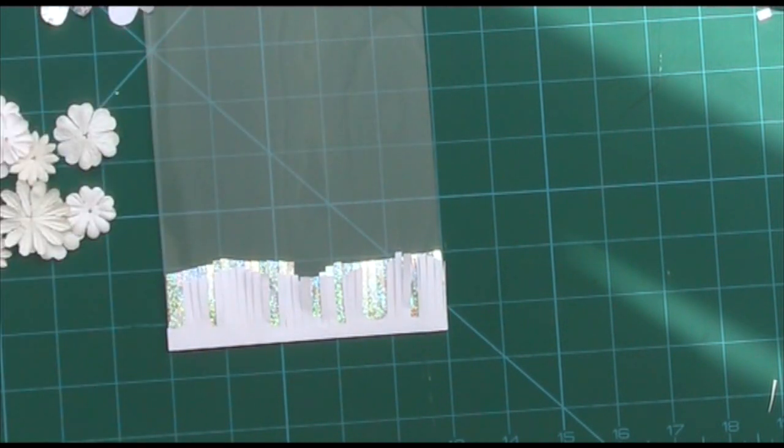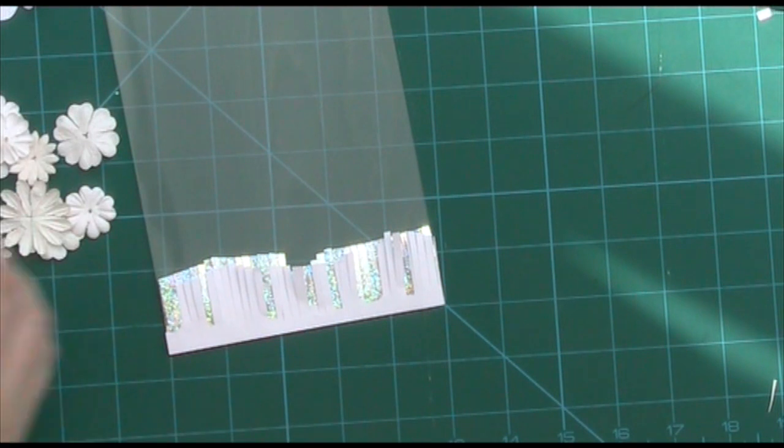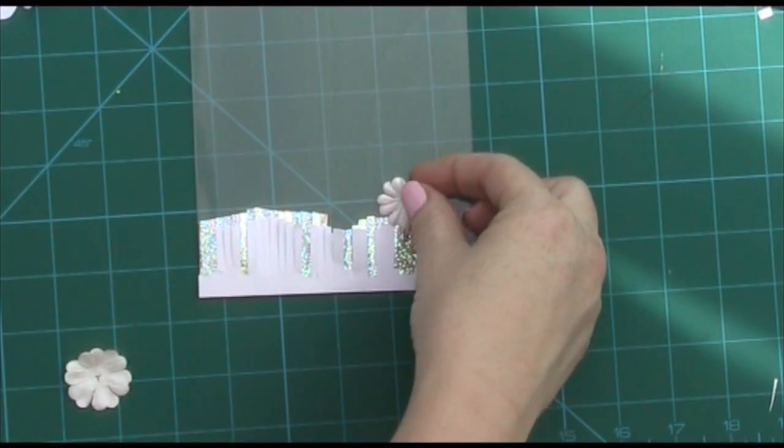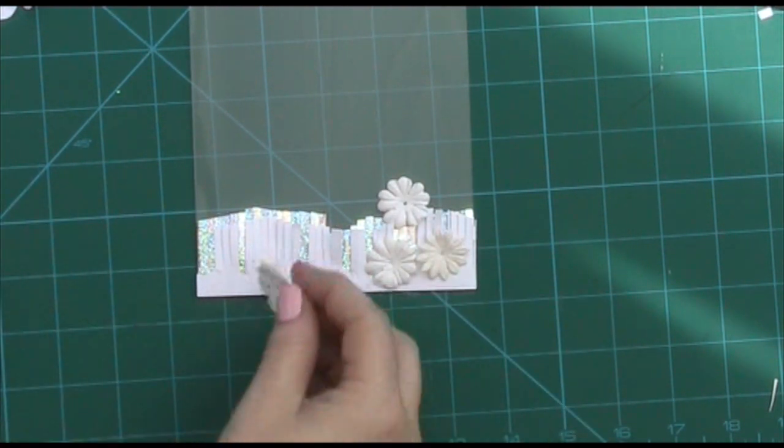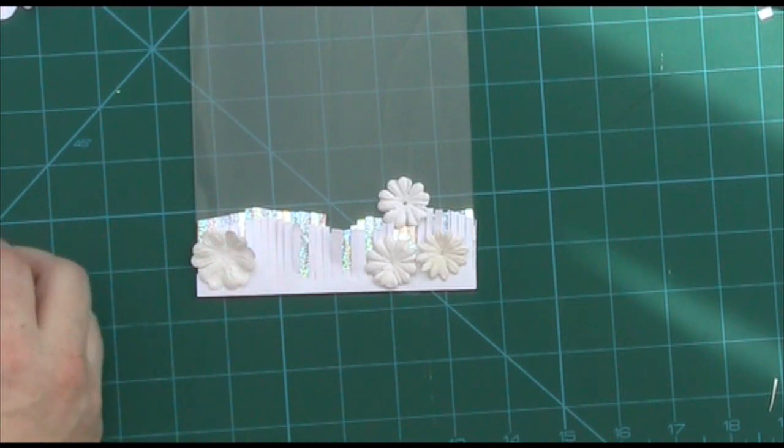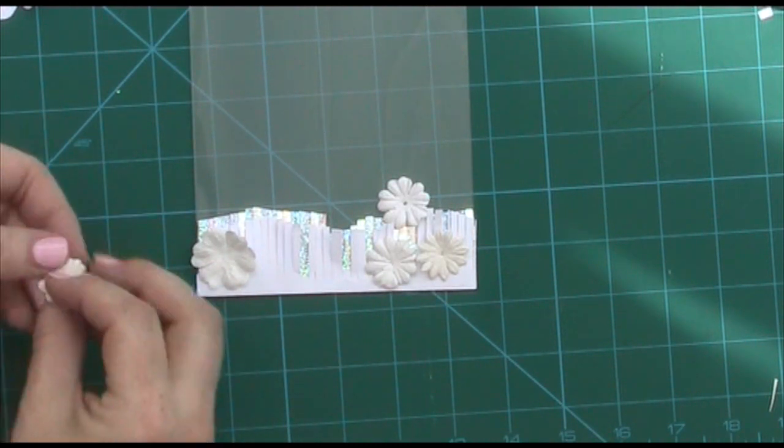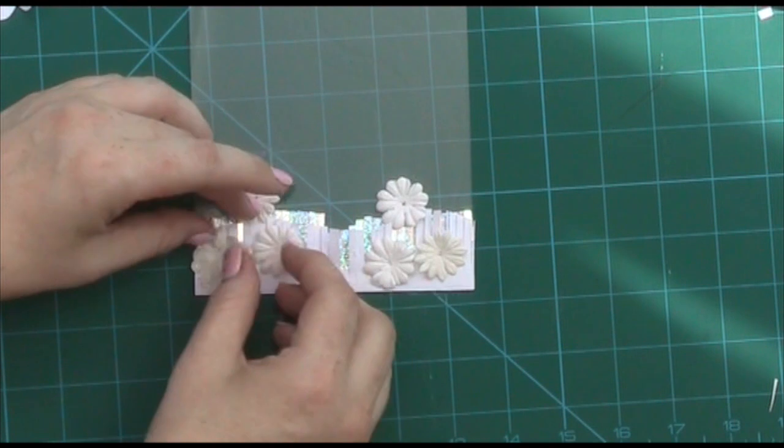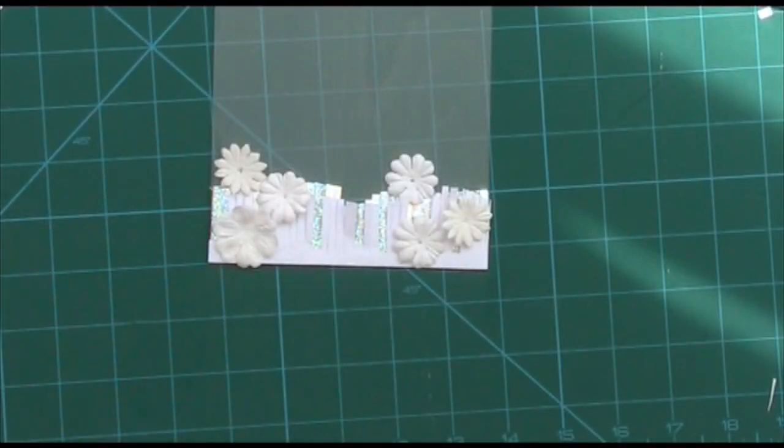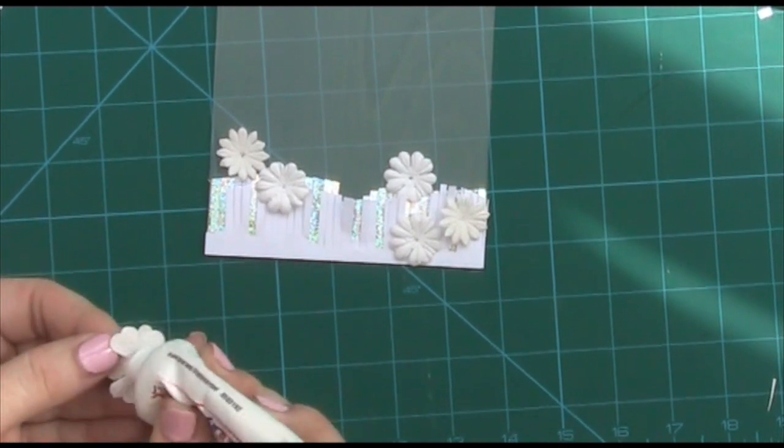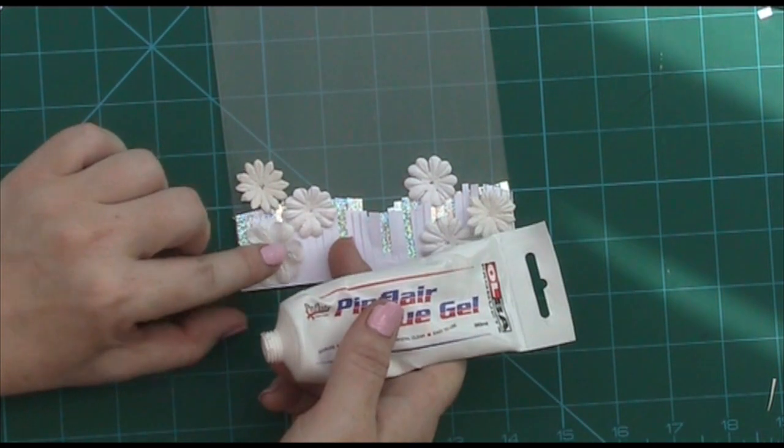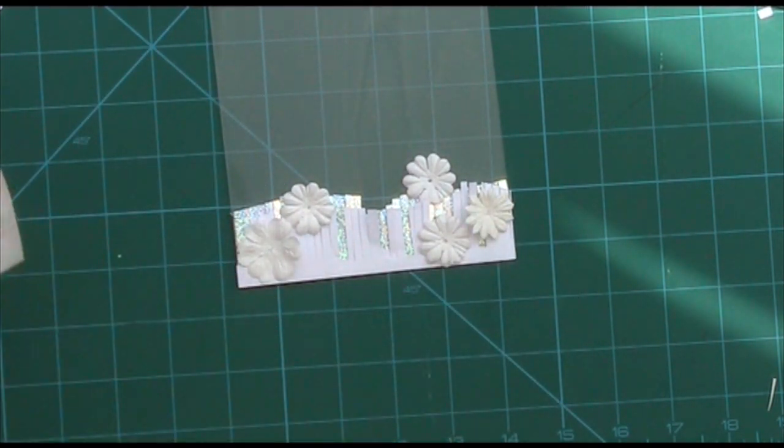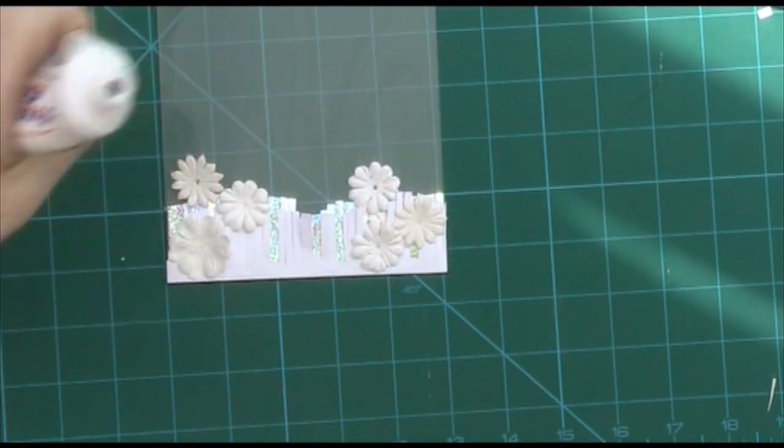And then I want to put my flowers on next. I'll put some pearls and things in those in due course so that they look more finished in the center. Just taking a tiny blob of the glue gel on the back of each flower and popping those in place. There we go, so that's our flowers in position.